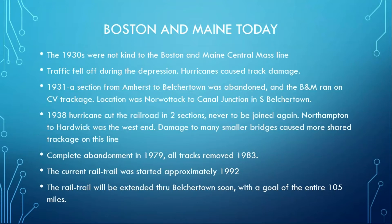The 1930s were not kind to the Boston and Maine Central Mass line. Traffic fell off during the Depression. Hurricanes caused all sorts of damage. In 1931, a section from Amherst to Belchertown was abandoned. The 1938 hurricane cut the entire railroad into two sections, never to be joined again — Northampton to Hardwick on the west end. The complete abandonment was done in 1979, tracks removed around 1983, and the rail trail was started around 1992.